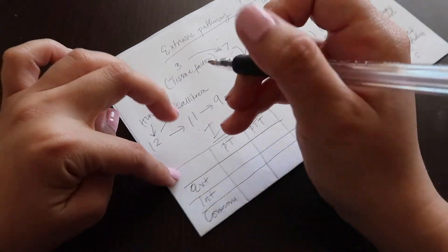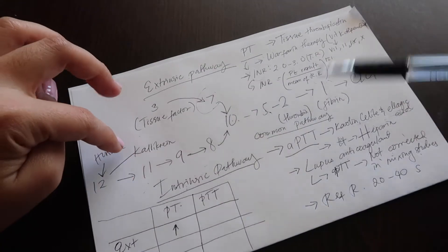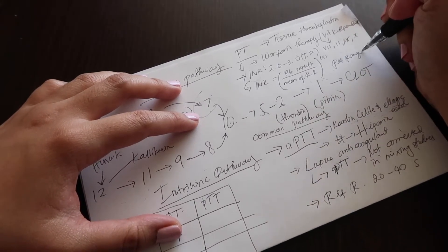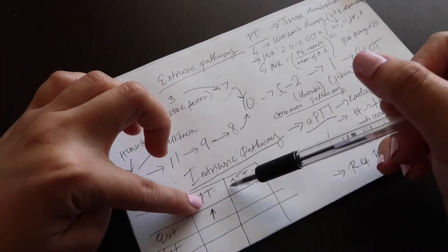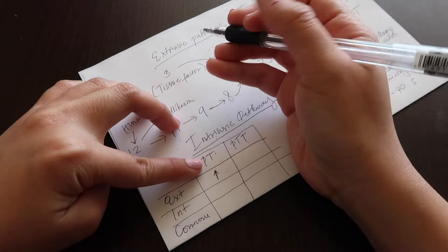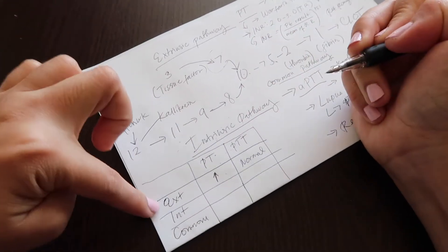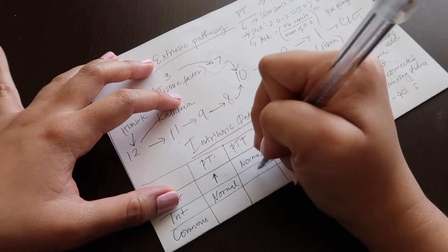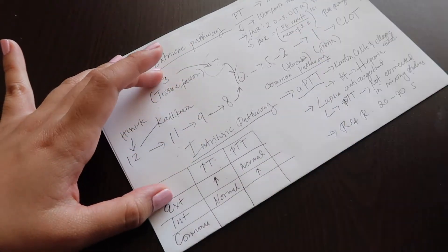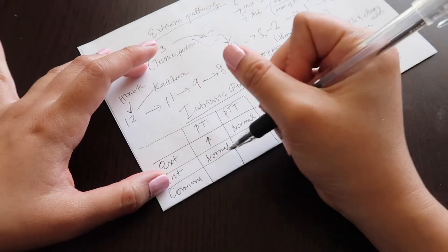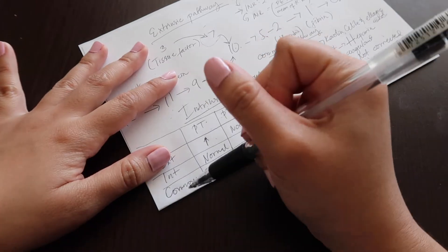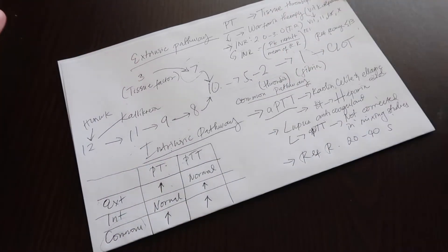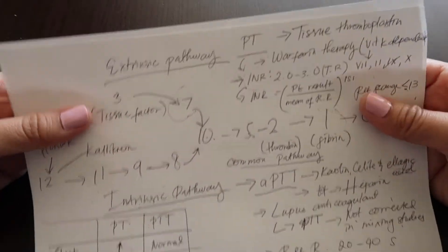So if there's a prolonged PT result, so longer than the reference range for this, which is less than 13 seconds, if your PT is prolonged longer than 13 seconds but your PTT is normal, you have something wrong in your extrinsic pathway. Now the opposite is when your PT is normal and your PTT is prolonged, there's something wrong with your intrinsic pathway. But then if both are prolonged, you have a common pathway problem right here, because both of them are affected. Both PT and PTT are prolonged. So that's it. That pretty much covers the coagulation cascade.